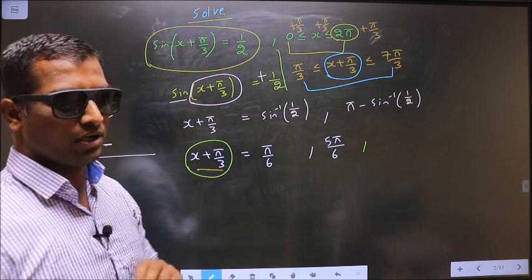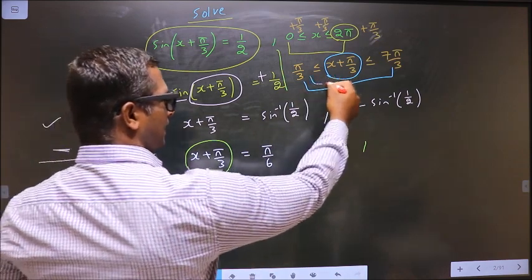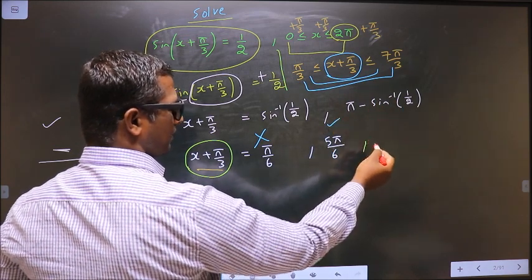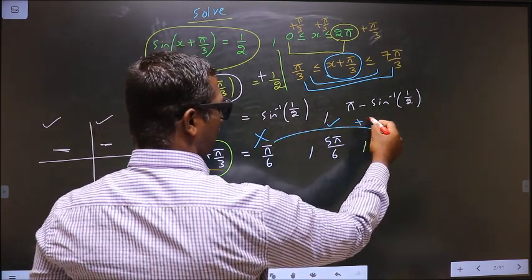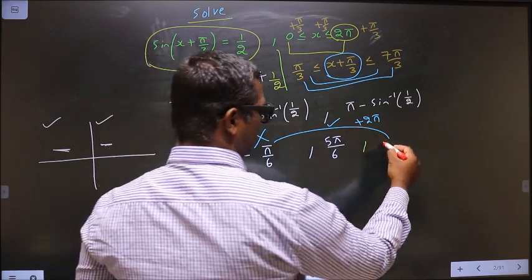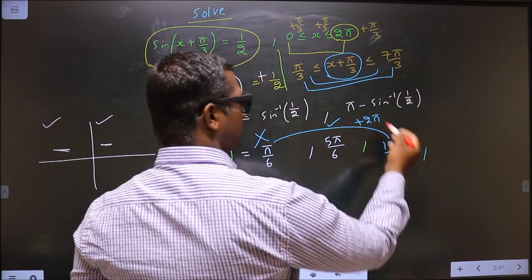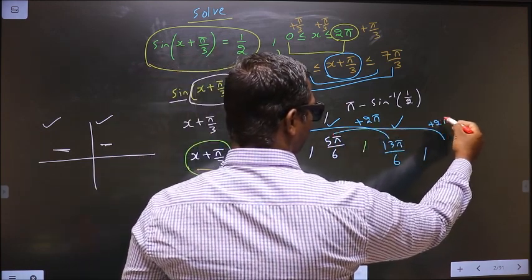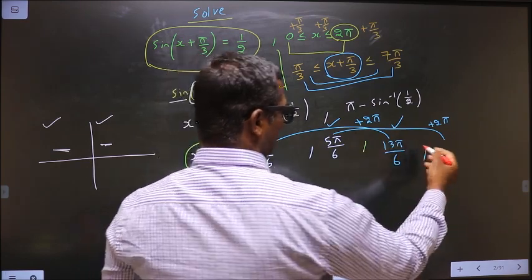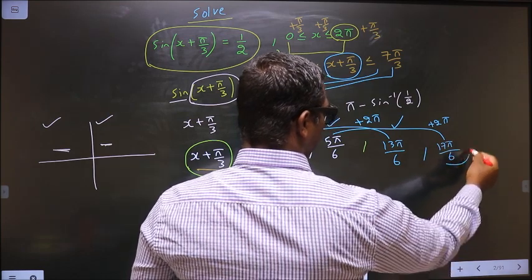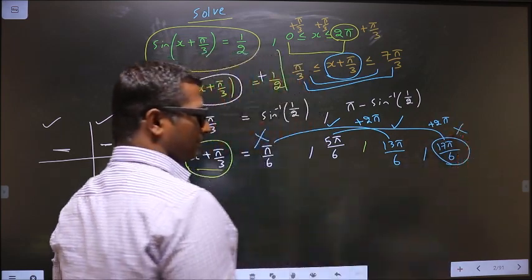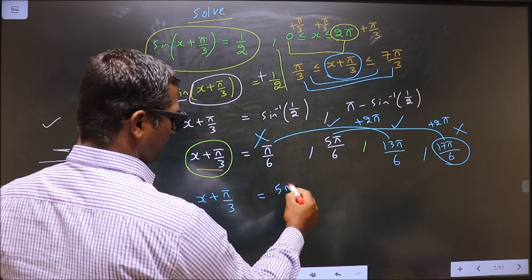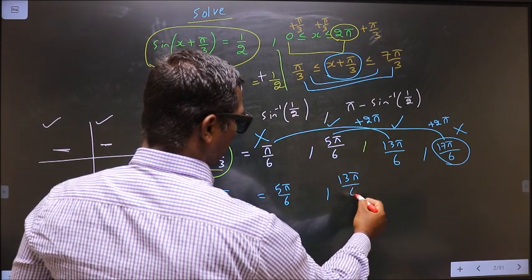Now let us check which values lie in the interval [π/3, 7π/3]. Does π/6 lie in this interval? No — so reject it. Does 5π/6 lie in this interval? Yes — so it is accepted. To get another angle, add 2π to π/6: π/6 + 2π = 13π/6. Does 13π/6 lie in this interval? Yes — accepted. Now add 2π to 5π/6: 5π/6 + 2π = 17π/6. This does not lie in the interval — reject it. So the values for x + π/3 are 5π/6 and 13π/6 only.